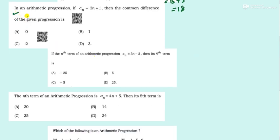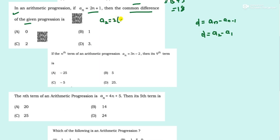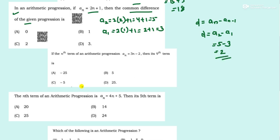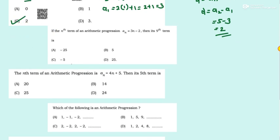Next question: In an AP, if a_n is given, find the common difference. The common difference d = a_n − a_(n−1), or equivalently a2 − a1. Find a2: 2(2) + 1 = 5. Find a1: 2(1) + 1 = 3. So d = 5 − 3 = 2. That is the common difference.